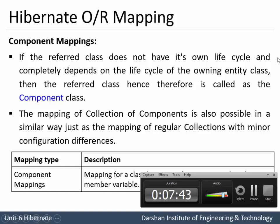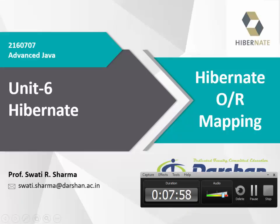So we have studied Hibernate ORM Mapping with three types of mapping: one is Collection Mapping, second is Association Mapping, and third is Component Mapping. With this we complete Hibernate Object Relational Mapping. Thank you.